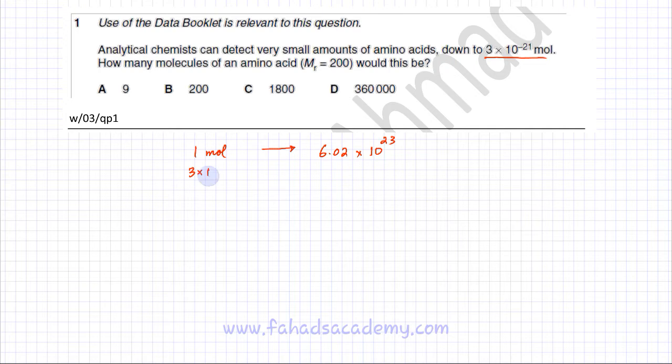We can use ratios or the unitary method to find the unknown number of particles, which would be given as X. Cross multiplying, we can find the value of X.